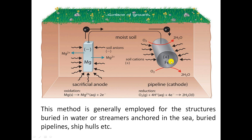Instead of the iron pipe, the magnesium undergoes corrosion. By using a highly active metal, we prevent the corrosion of the base metal. The advantages of the sacrificial anodic method are: the method is very simple and economical; no external power supply is required, because the active metal itself undergoes oxidation and thereby produces the protective current, making the base metal act as a cathode; and it requires minimum maintenance.